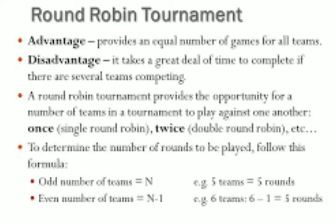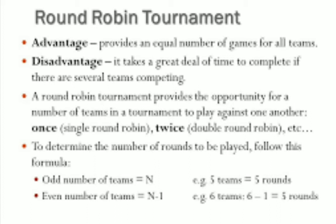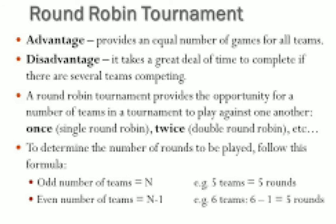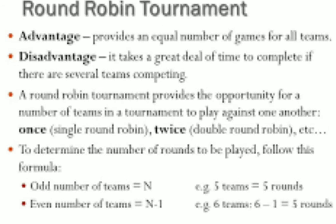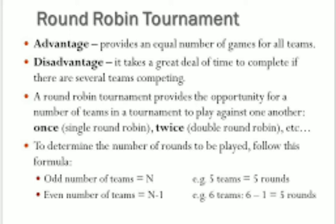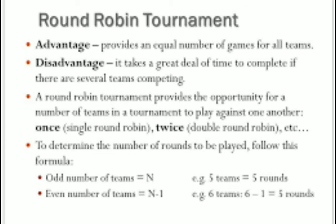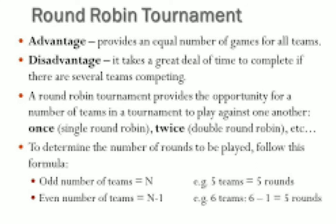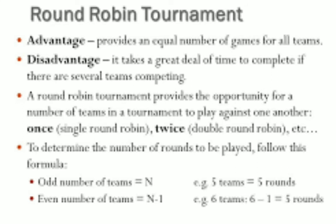Round Robin tournament advantages and disadvantages: it provides an equal number of games for all teams. The disadvantage is that it takes a great deal of time to complete if there are many teams competing. A Round Robin tournament provides the opportunity for teams to play against one another once (single Round Robin), twice (double Round Robin), etc. To determine the number of rounds to be played, follow the formula: N equals the number of teams. For an even number of teams, rounds equal N minus 1.